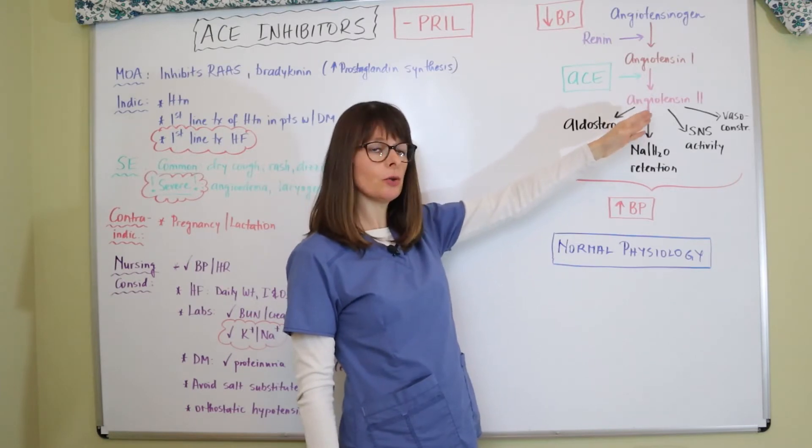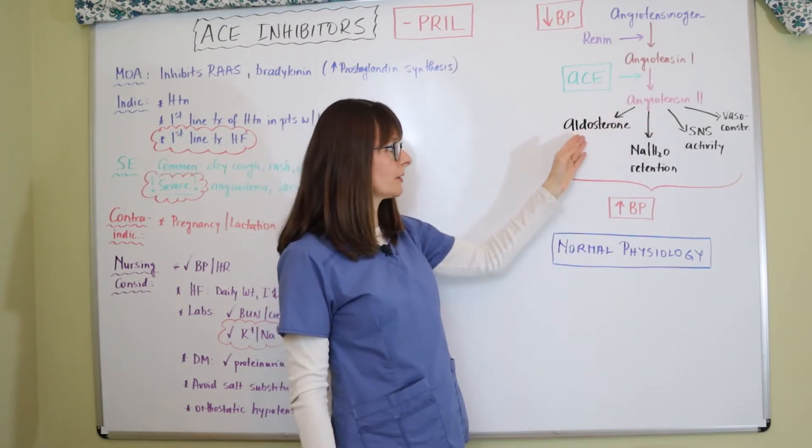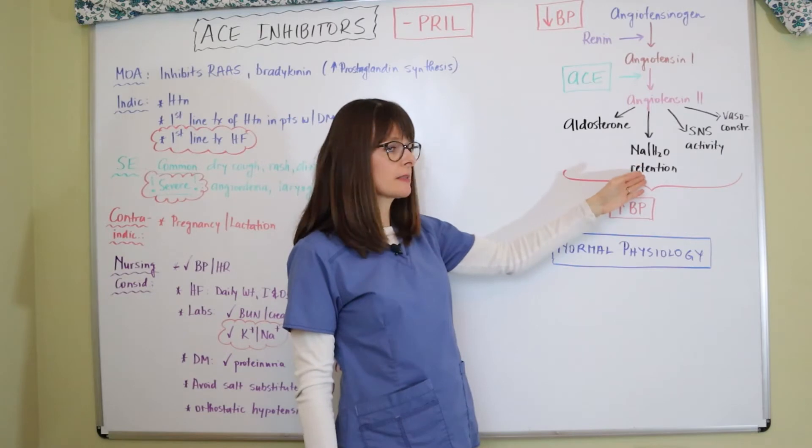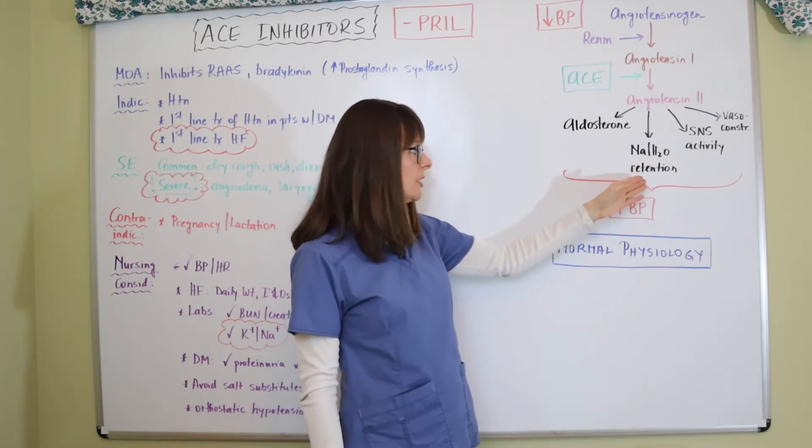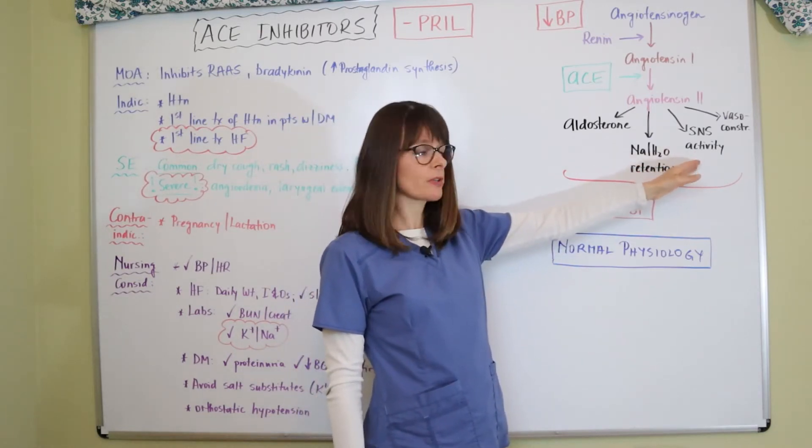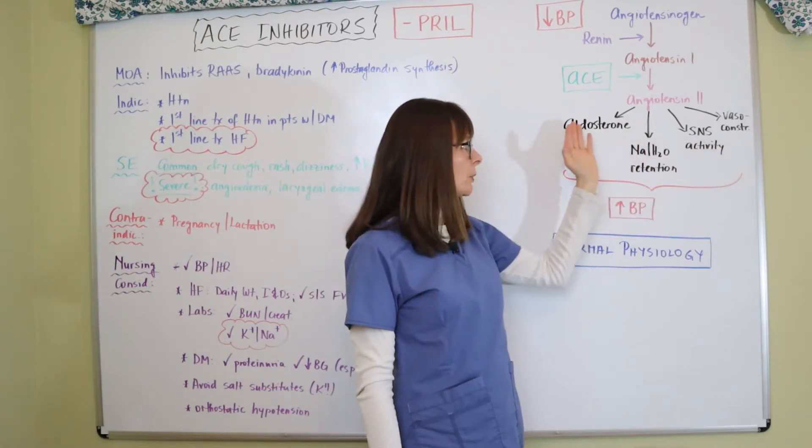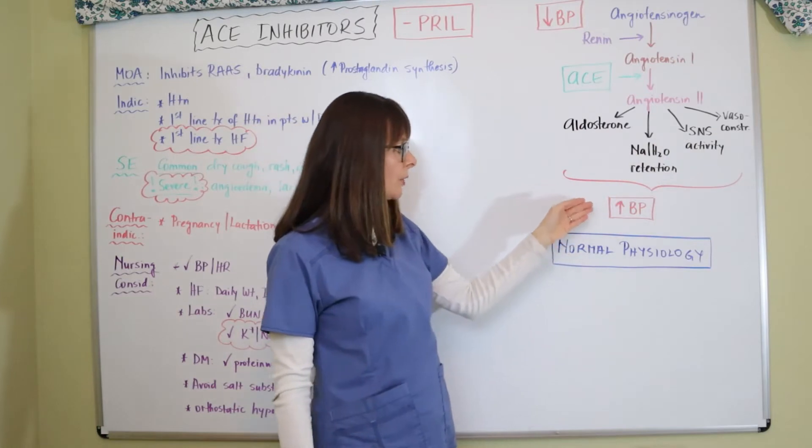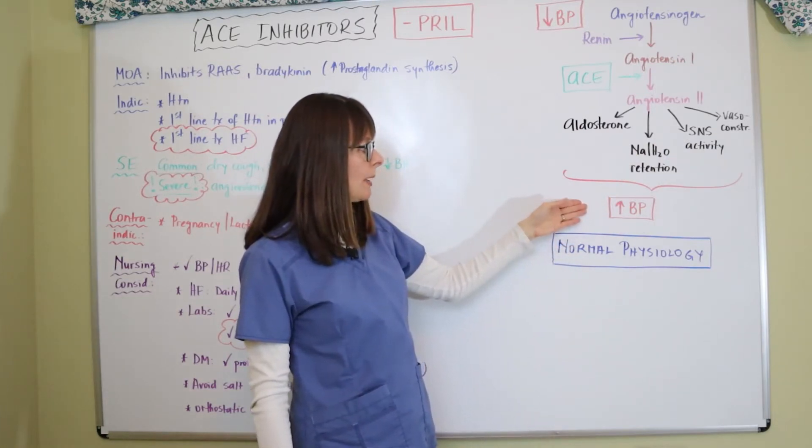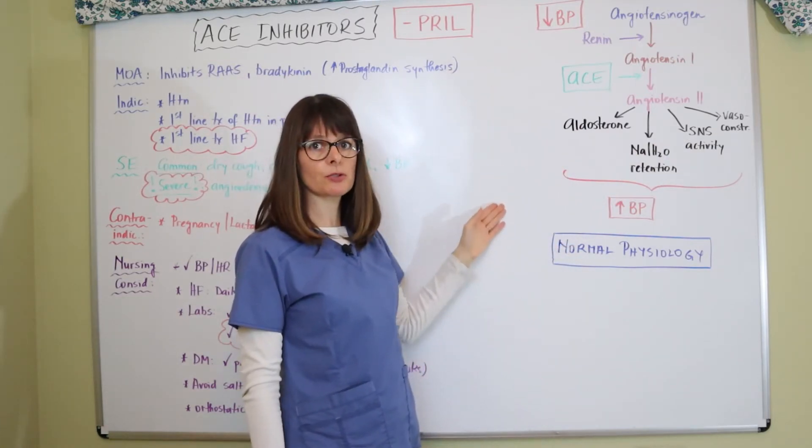Angiotensin 2 then works to release aldosterone. It enhances sodium and water retention, increases sympathetic nervous system activity as well as vasoconstricts. So with all these four targets here, we're able to increase our blood pressure. And that is under normal circumstances.